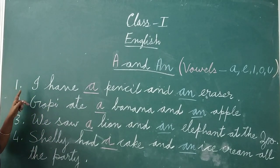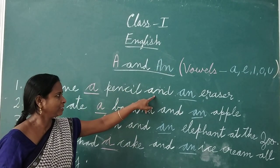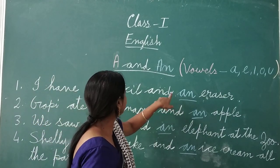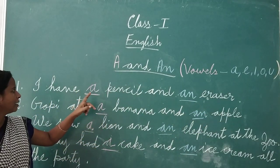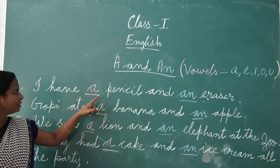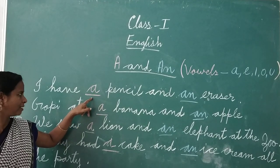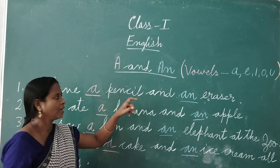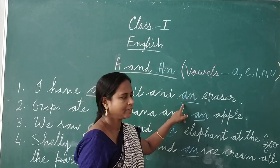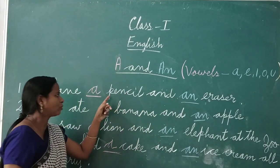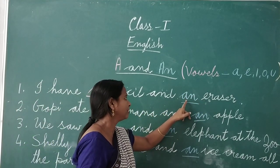For example: I have a pencil and an ink pen. Here, pencil starts with consonant P. So before a consonant, you always have to write 'a'. And before a vowel alphabet, you always have to write 'an'.